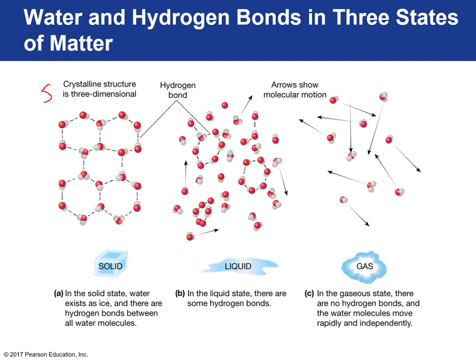In all three states of matter, water has different hydrogen bond arrangements. In the solid crystalline structure of ice, molecules form a three-dimensional network with bonds between each molecule. Going from solid to liquid, some hydrogen bonds remain while some molecules are completely free moving. In a gaseous state, all water molecules are free to move independently wherever they want.